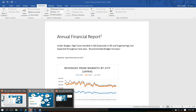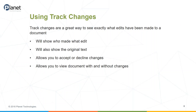The next thing I want to cover is track changes. We just saw an instance where I opened a document that was read-only. You can work online and use co-authoring with OneDrive or SharePoint where multiple people can edit a document at the same time. But there are still instances where you want to use track changes. Track changes is a great way to see exactly what edits have been made — it will show you who made the edit, give you the original text, show strikethroughs for deletions and underlines for additions, and then you can accept or decline those changes.